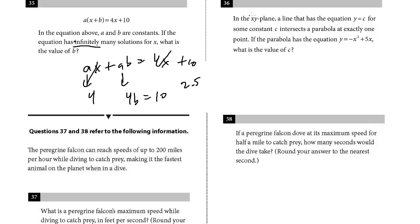Question 36. In the xy-plane, a line that has the equation y equals c for some constant c intersects a parabola at exactly one point. If the parabola has the equation y equals negative x squared plus 5x, what's the value of c? So it really helps if you understand how graphs, or functions, and lines, just how they would appear. In terms of intersections, let's think about it.